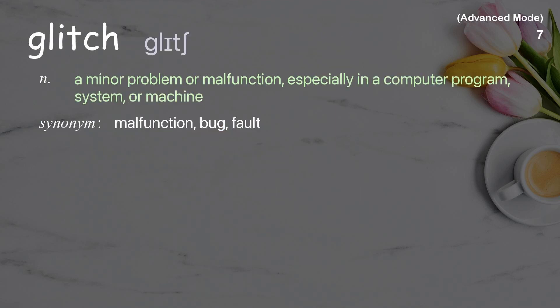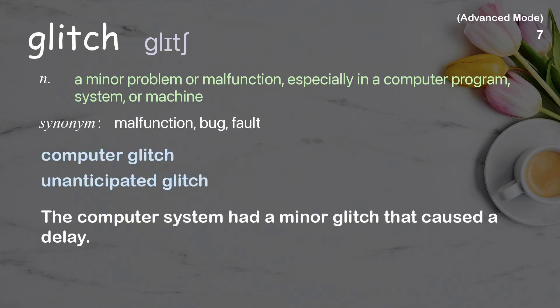Glitch: a minor problem or malfunction, especially in a computer program, system, or machine. Examples: computer glitch, unanticipated glitch. The computer system had a minor glitch that caused a delay.